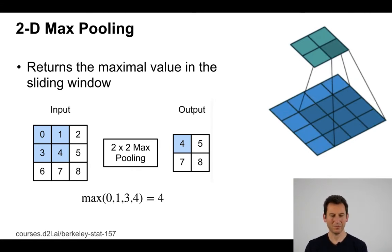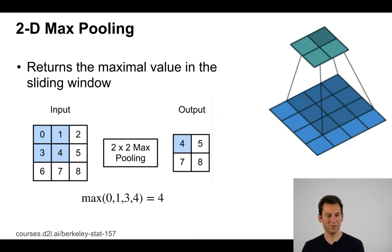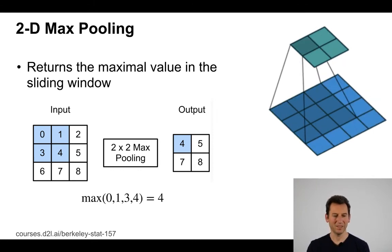It just takes the maximum of that patch and it moves one block to the right. It performs that again, and so if we do 2 by 2 max pooling we turn a 3 by 3 input into a 2 by 2 output.